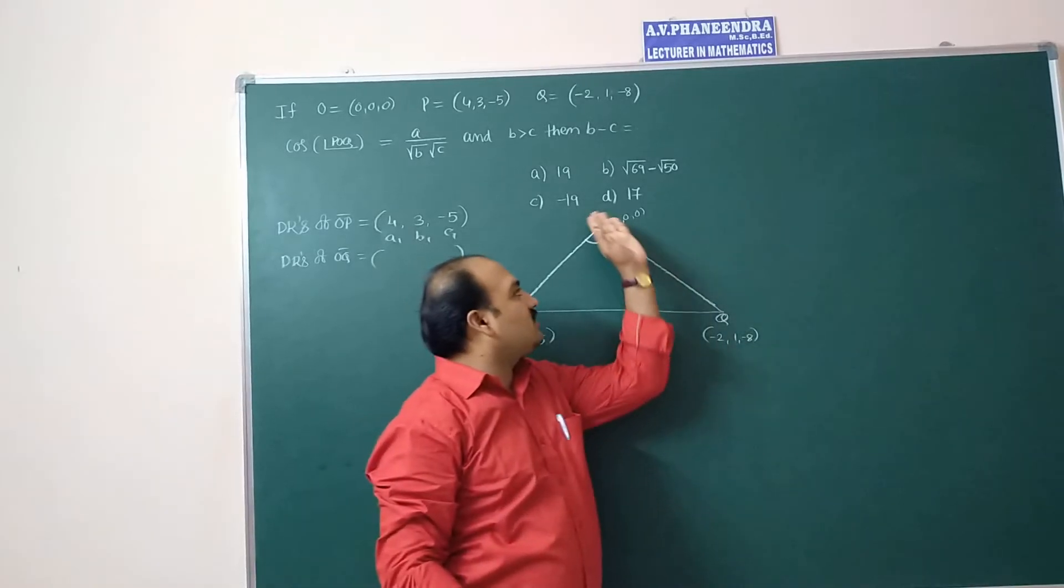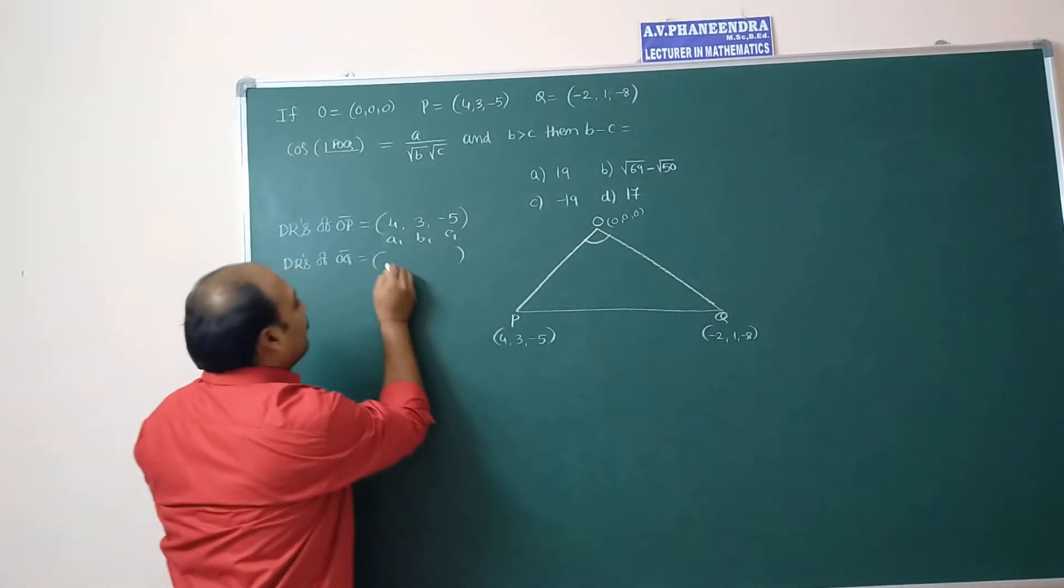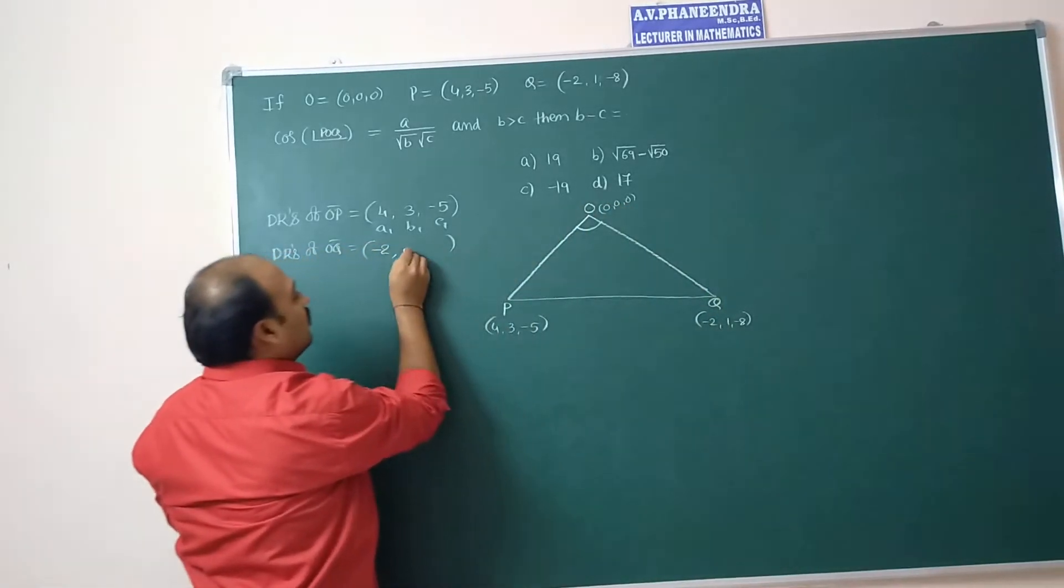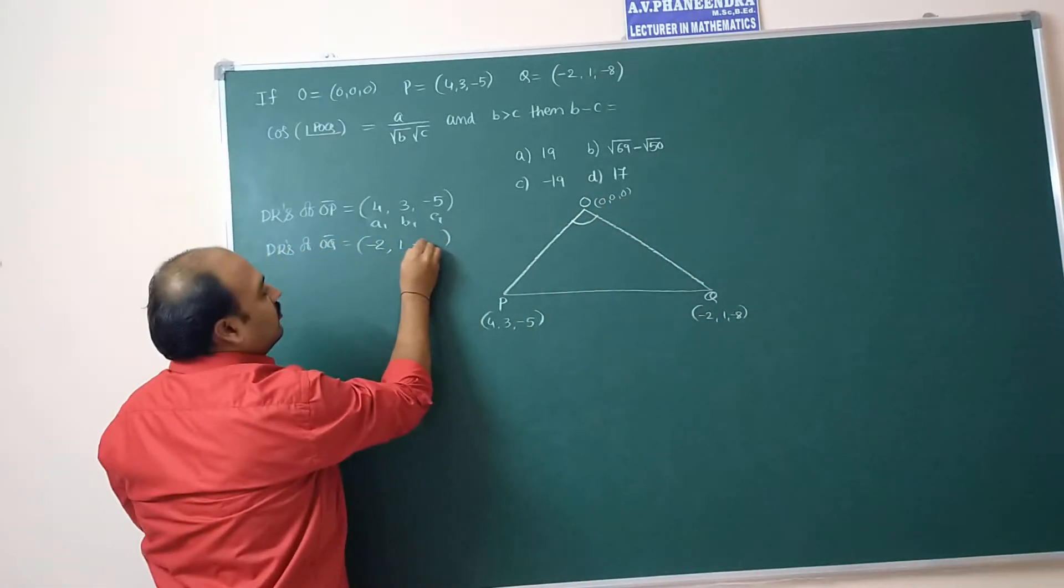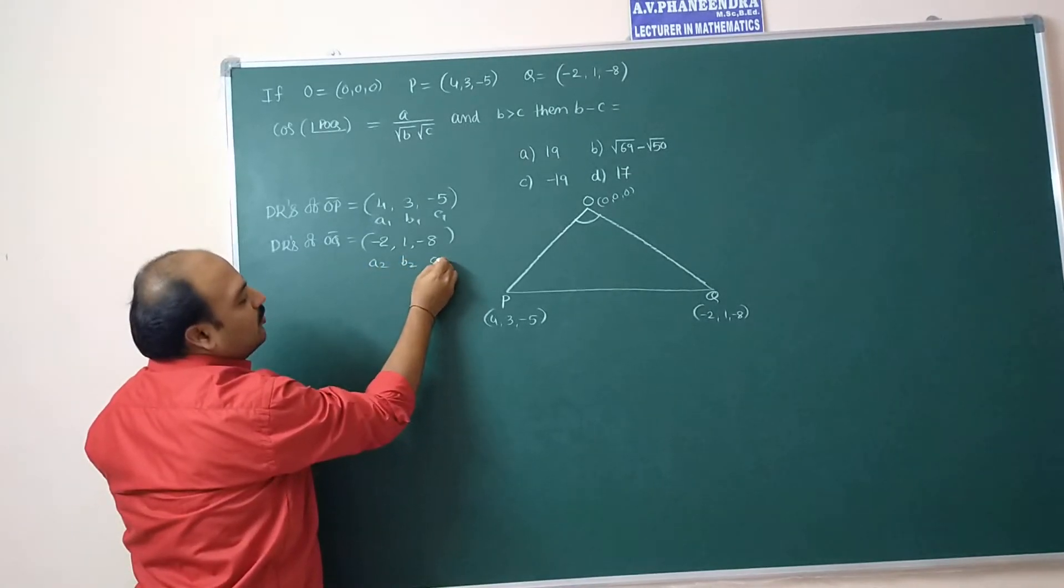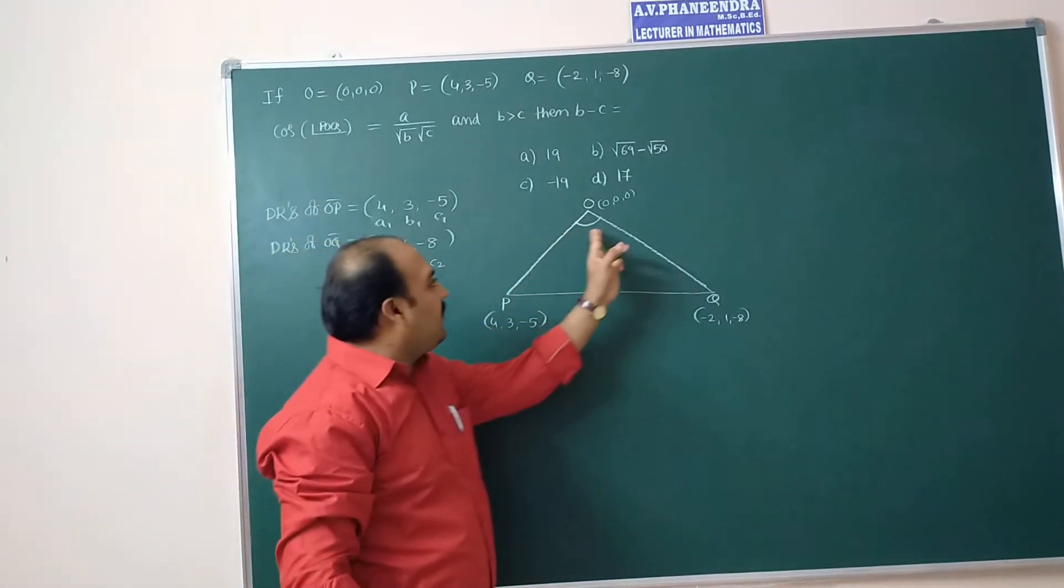Next direction ratios of side OQ. OQ means Q minus O: minus 2 minus 0, so minus 2, 1 minus 0, minus 8 minus 0. Second side, so the direction ratios A2, B2, C2.